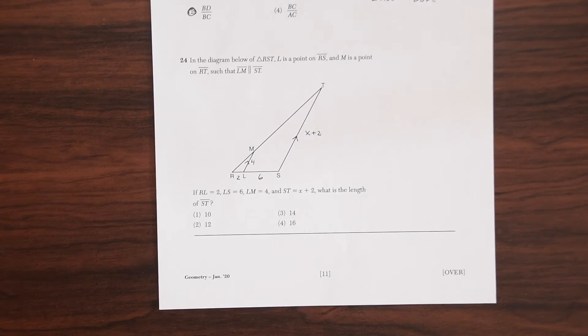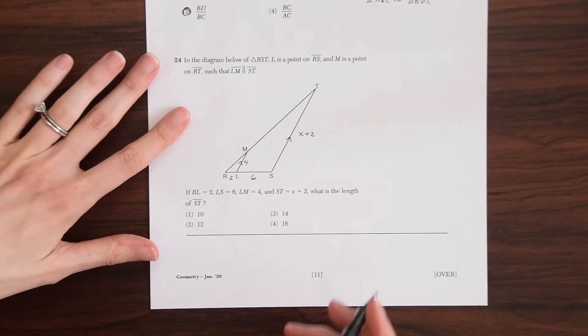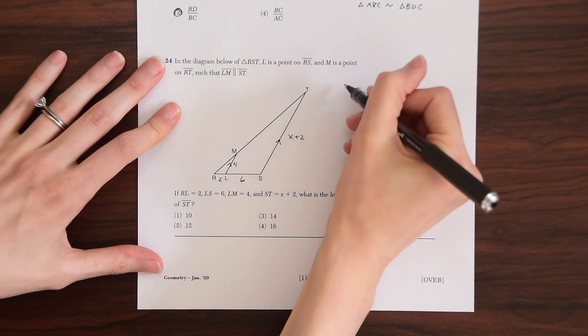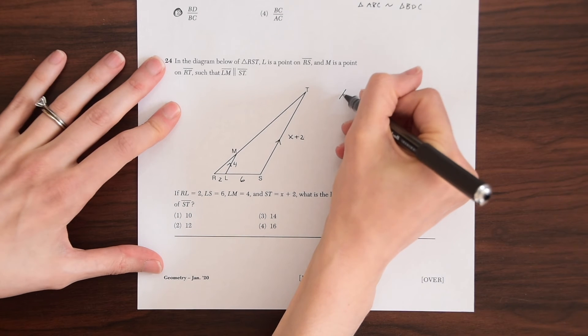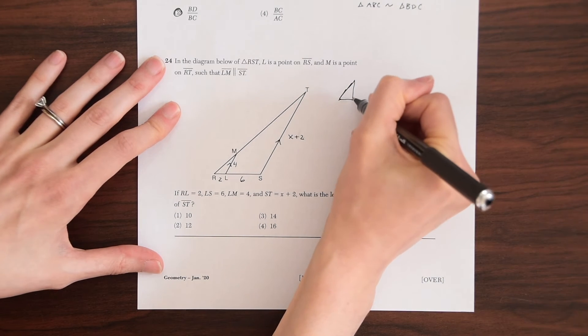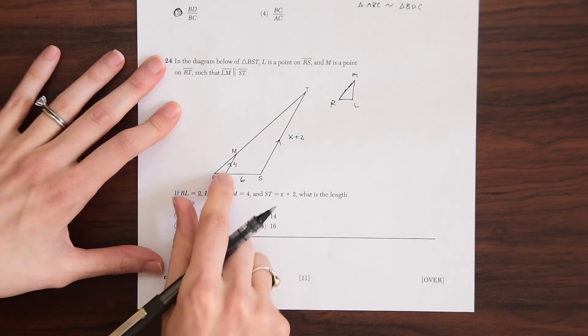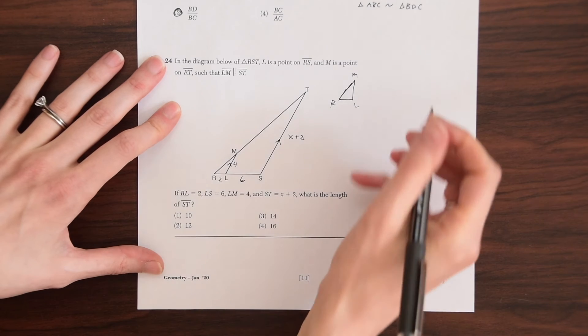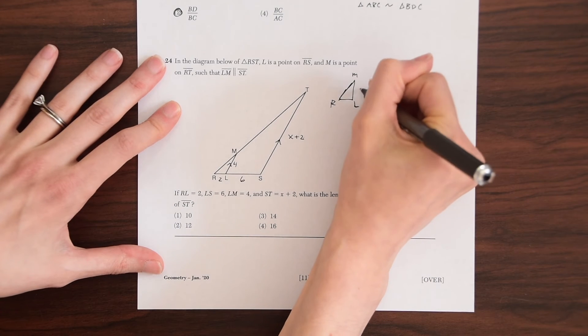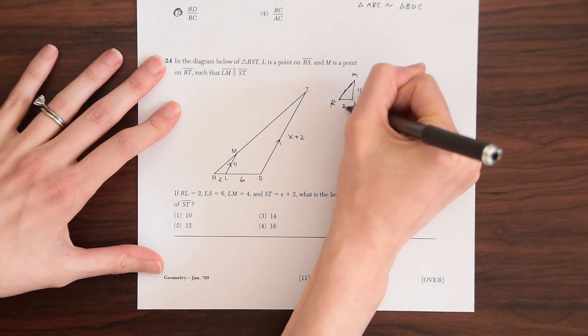So this again looks like a similar triangle problem. So let's draw out our smaller triangle and our bigger triangle, the two triangles we're working with. So we have the smaller one, which is R, M, L, which I get just by looking at this little piece right here, kind of cutting this piece off. And we have this line segment is four and this line segment is two.